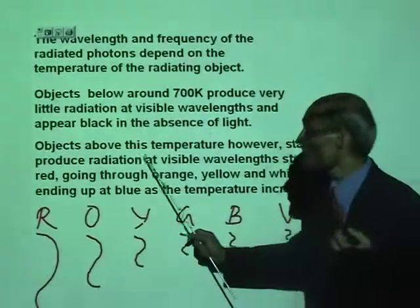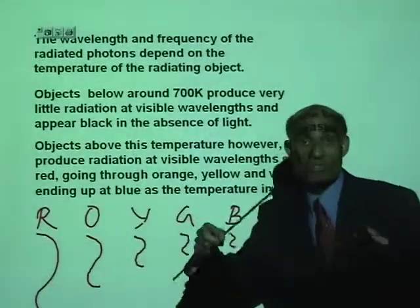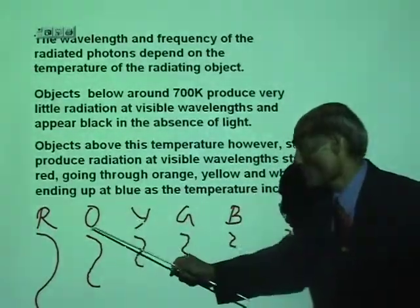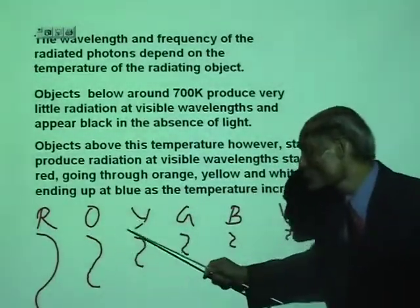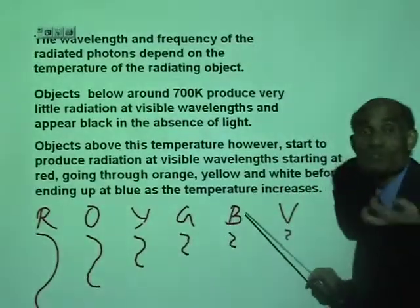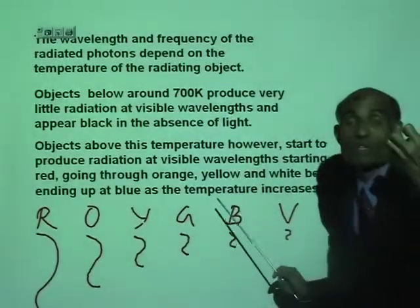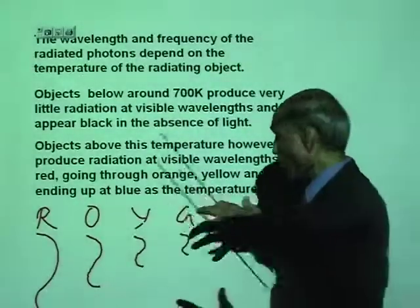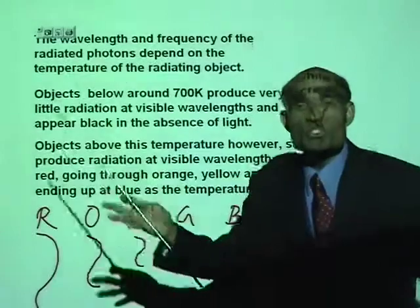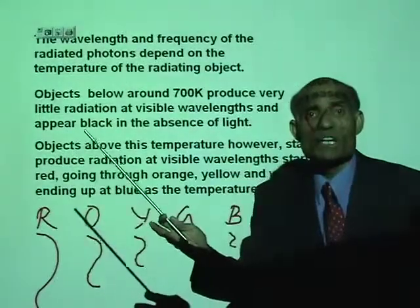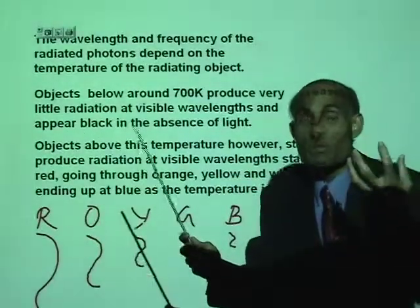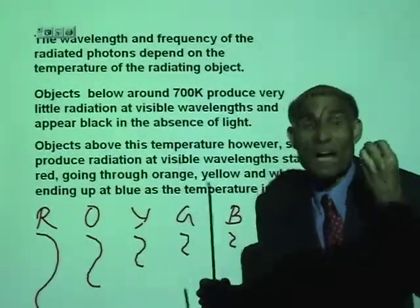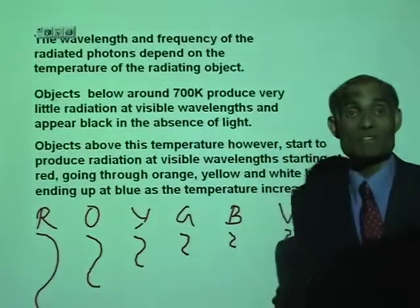As you increase the temperature of the object, all these radiations will begin to be given out. And when all these radiations start giving out, the temperature will be about 5,000 degrees Celsius.